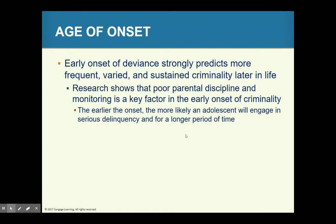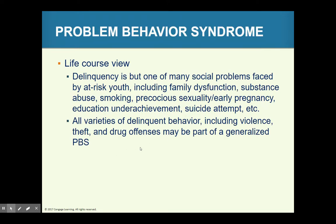The Cambridge Study did research on delinquent development. Problem behavior syndrome identifies a cluster of behaviors including family dysfunction, substance abuse, smoking, precarious sexuality, early pregnancy, educational underachievement, suicide attempts, sensation-seeking, and unemployment — all part of the life course view that had effects on juveniles continuing their delinquency.